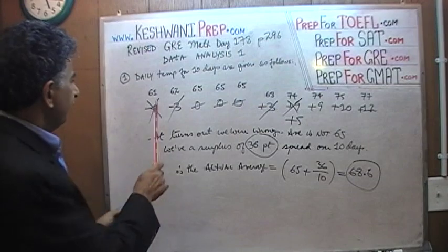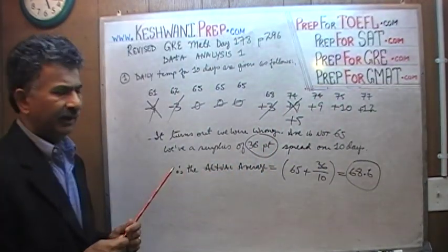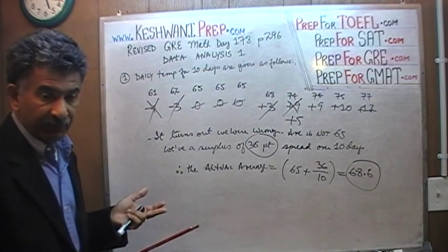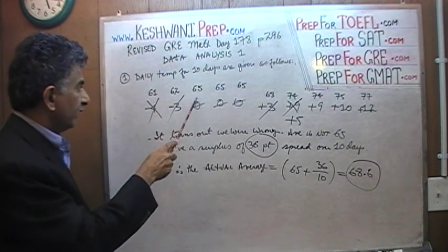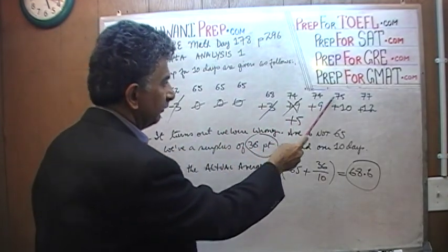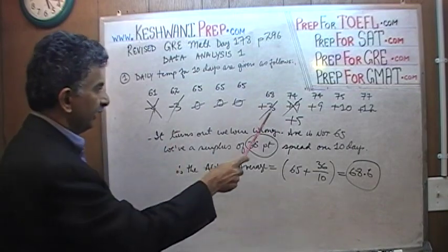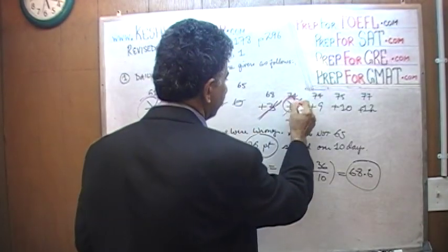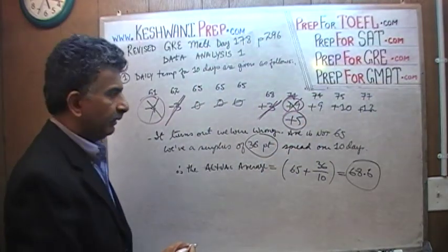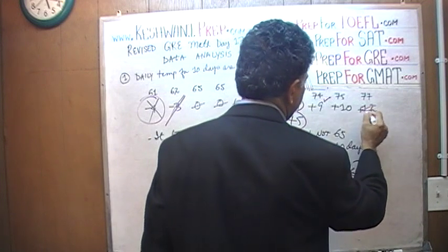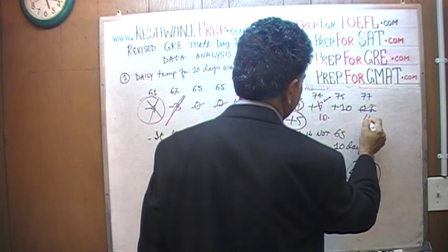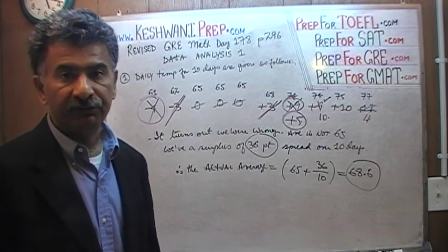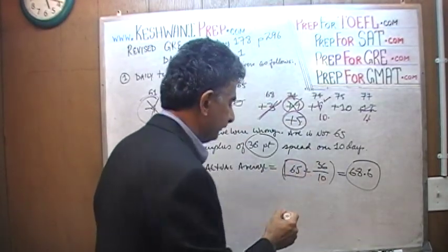I see a whole bunch of numbers here — in the low 60s, in the mid 70s, and one in the high 70s. So I'm pretending the average is going to be somewhere in the middle, around 65. We make every one of them 65: this one is 4 short, this one is 3 short, then 0, 0, 0, then 3 more, 9 more, 9 more, 10 more, 12 more. Cancelling: negative 3 and positive 3 cancel; negative 4 takes out part of 9, leaving positive 5. Adding up: 10 plus 10 is 20, plus 10 is 30, plus 1 is 31, plus 5 is 36. Spread 36 over 10 days: that's 3.6. So 65 plus 3.6 is 68.6.